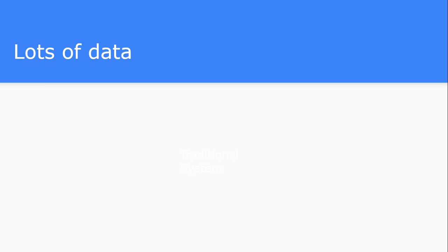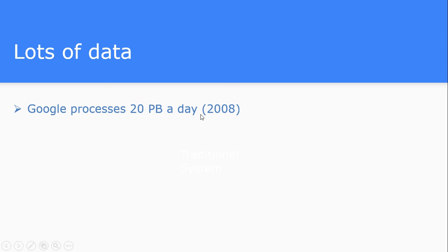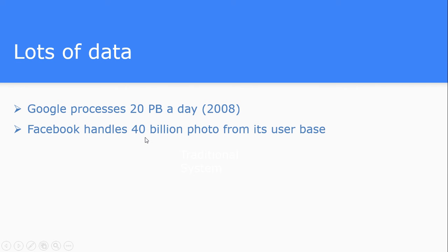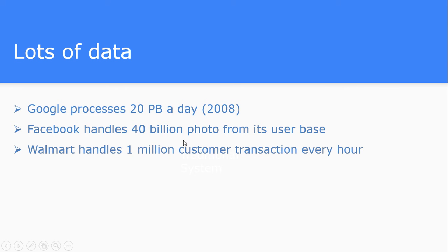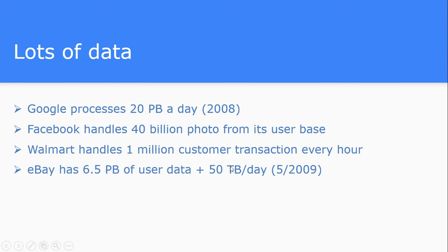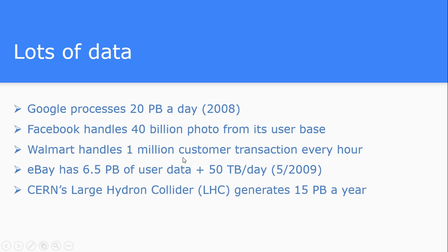First of all, there is lots and lots of data available. This is just to give you a glimpse of the scale at which data is available to us — it is enormous. Google is already processing 20 petabytes of data per day, and that was back in 2008. Facebook is already handling 40 billion photos from its user base. Walmart handles 1 million customer transactions every hour. eBay has 50 terabytes of data for processing every day, and CERN's Large Hadron Collider laboratory generates 15 petabytes of data per year.